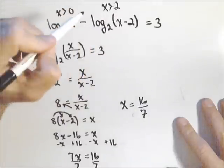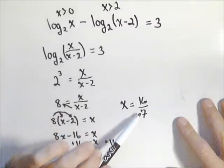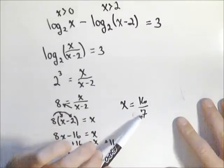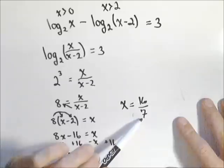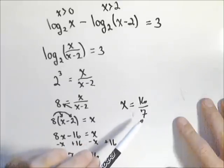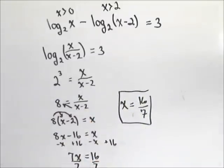If you're not sure how I'm getting these domains, there's another video that shows how to find the domain of a logarithmic function. Well, seven goes into 16 two times plus a remainder of two, so this is a little bit larger than two. In fact, about two-sevenths larger than two. So this one is okay, and there's our solution for x.